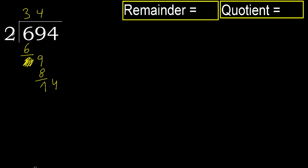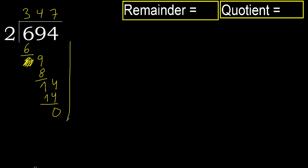Next, bring down: 14. 2 multiplied by 8 is 16, is greater. Multiply by 7 is 14, is not greater. Subtract. Next, that is not a number, therefore finish it.